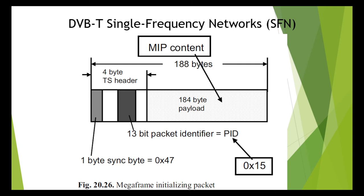If the transmission of the MIP packets stops for some reason, or if the information in the MIP packets is corrupted, then the single frequency network will lose synchronization. If a DVB-T transmitter detects that it has dropped lock, or that it has not received a GPS signal for some time and the 1 PPS reference and the 10 MHz reference have drifted, it has to go off air — otherwise it will only be a source of noise in the single frequency network.